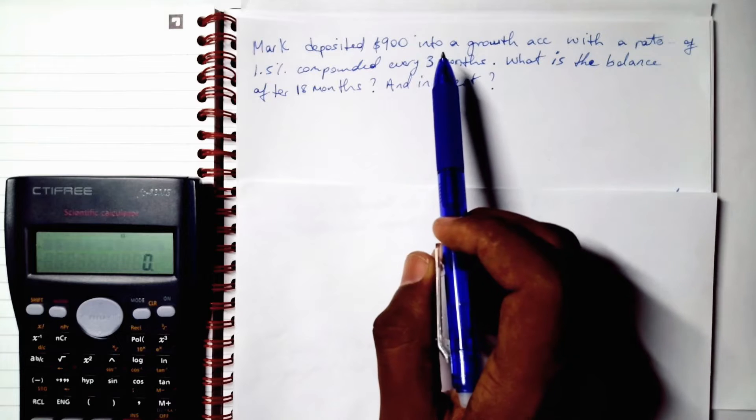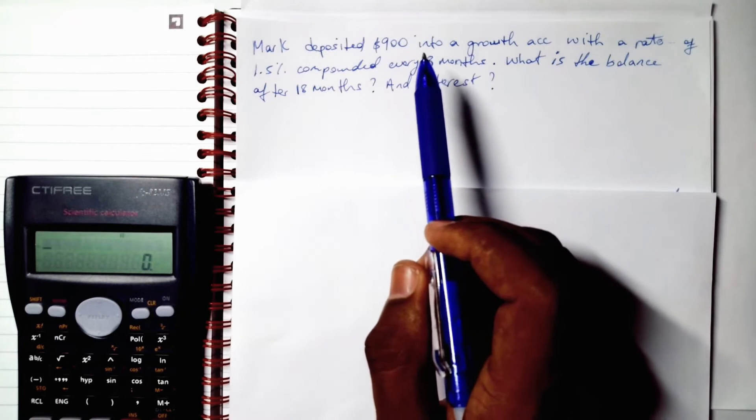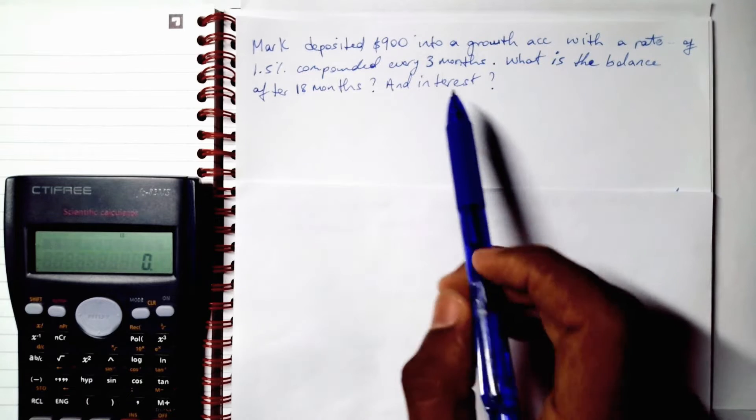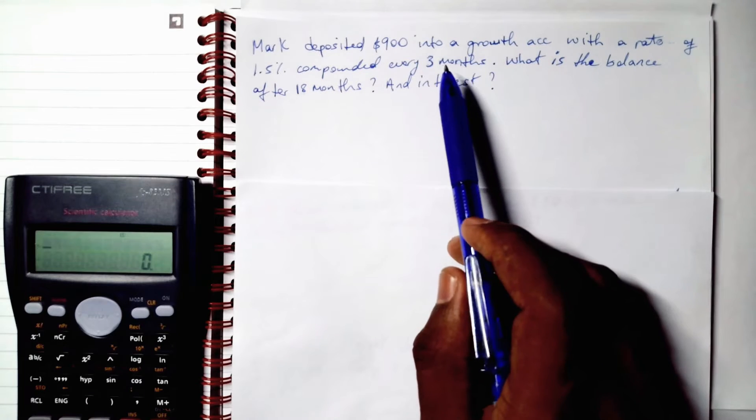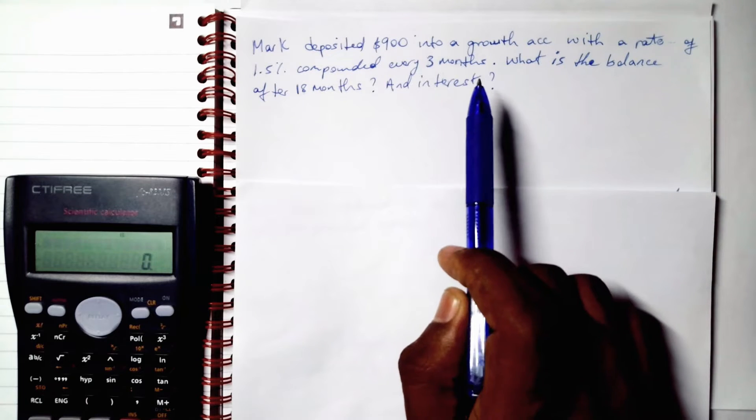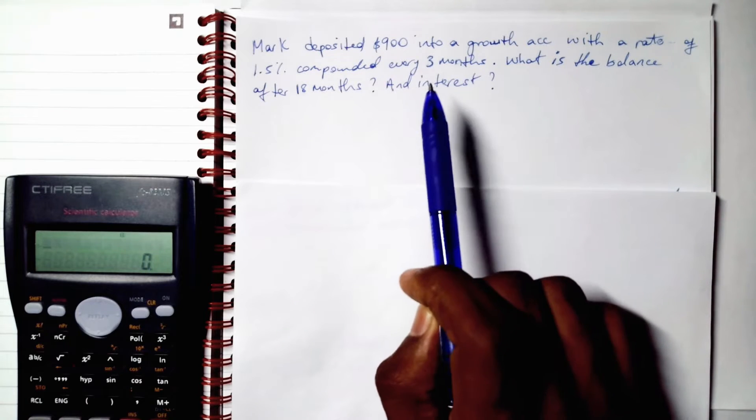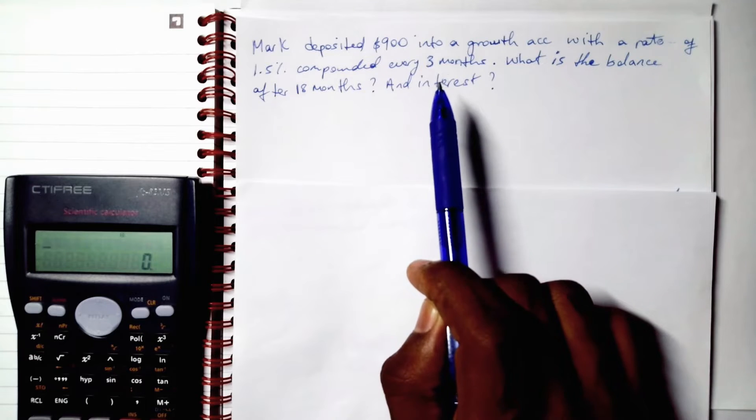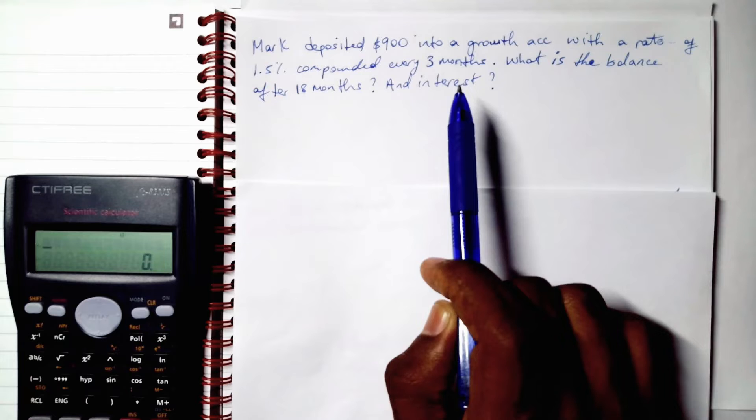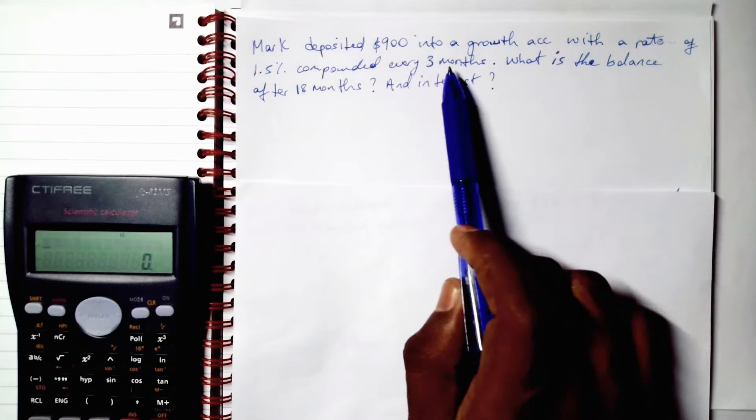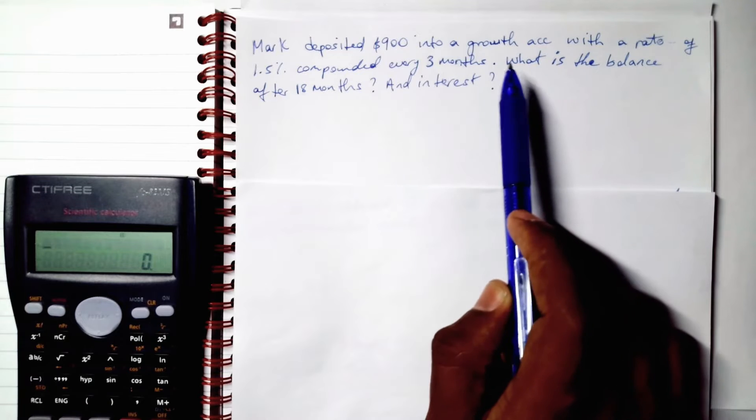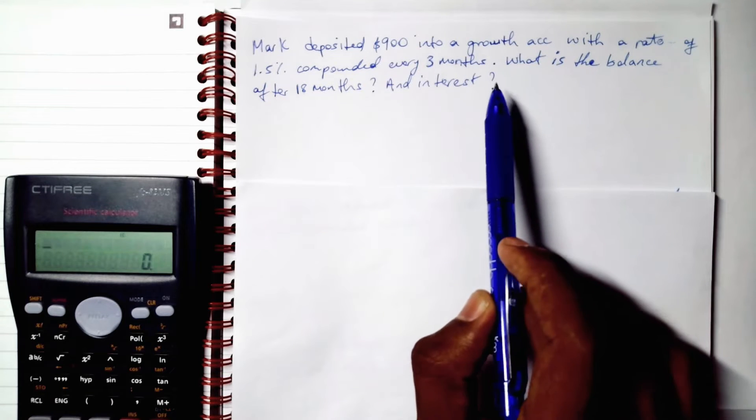So remember what we said about compounding interest and what our n will be. Our n will be the number of times within a year the interest compounds. So it compounds every three months.